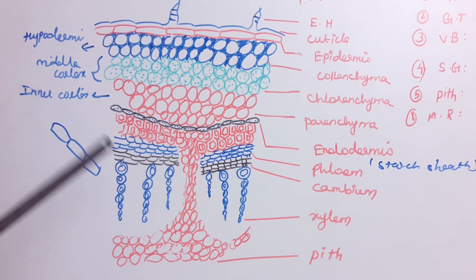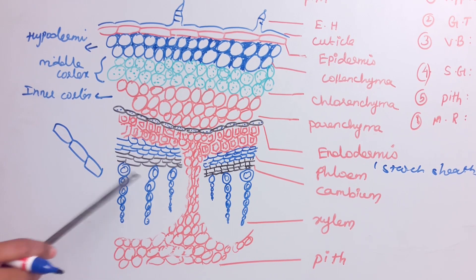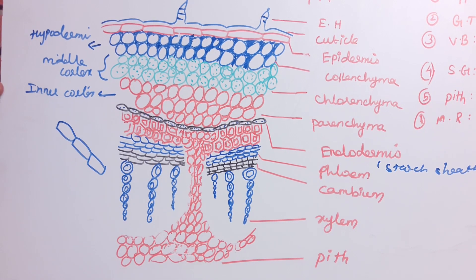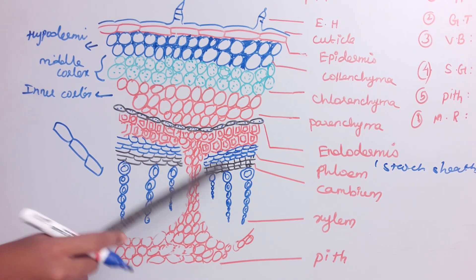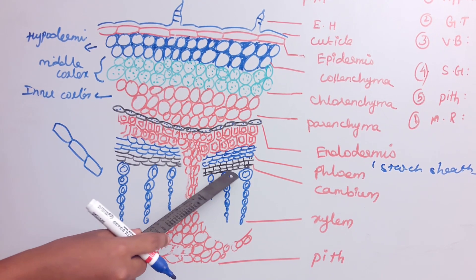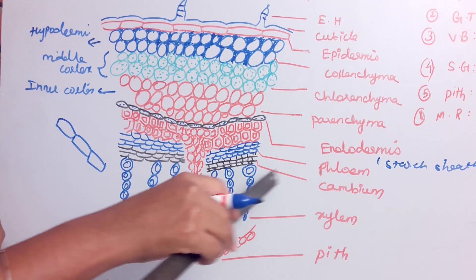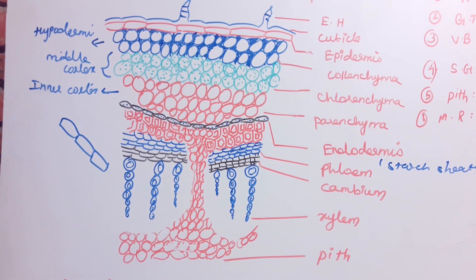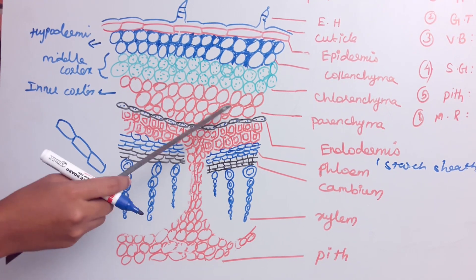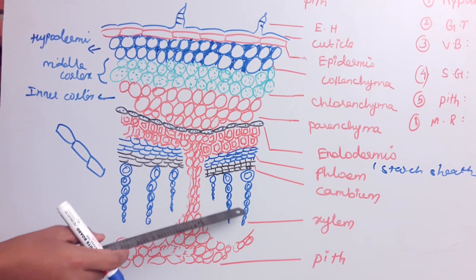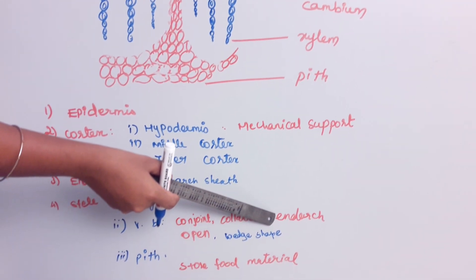The most important part is the vascular bundle. The vascular bundle is conjoint — meaning xylem and phloem are on the same radius. It is also collateral — meaning phloem is at the periphery and xylem is present internally at the center. So the vascular bundle is conjoint and collateral.